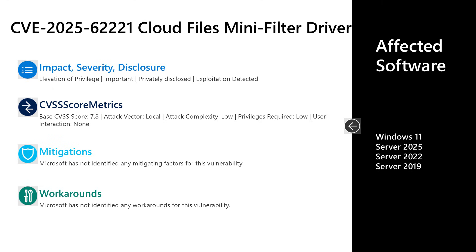The first vulnerability I'll cover from this month's release is documented as CVE-2025-6221. This is an important severity elevation of privilege vulnerability in the Cloud Files Mini Filter Driver, a component of Windows. This vulnerability was privately disclosed to Microsoft, but this is the one that hits the exploitation-detected flag. The base CVSS score is 7.8. The attack vector is local, attack complexity is low, privileges required is low, and no user interaction is required. A threat actor who successfully exploits this could gain system-level privileges. There are no documented mitigations or workarounds. Affected software includes Server 2019, 2022, and 2025, as well as Windows 11 on the desktop side.